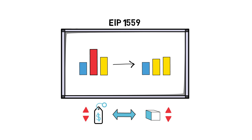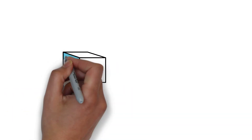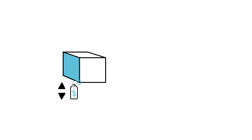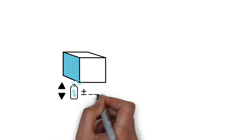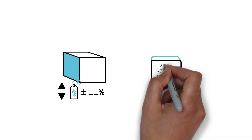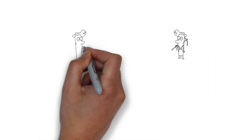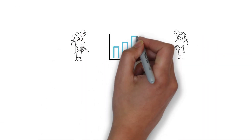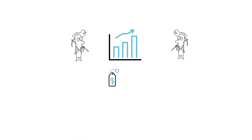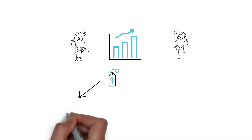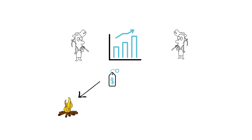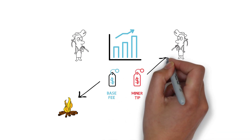Another way of thinking about this model is that it basically swaps high volatility in fee prices for volatility in block size. Because the increments and decrements are constrained, the difference in base fee from block to block can be easily calculated. This allows wallets to automatically set the base fee based on information from previous blocks. To avoid a situation where miners could collude and artificially inflate the base fee for their own benefit, the entire base fee is burned. The base fee is always entirely burned, while the miner tip is always entirely received by the miner.